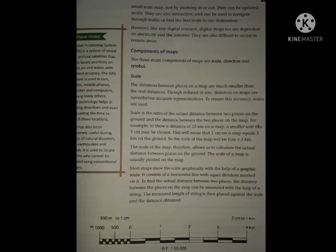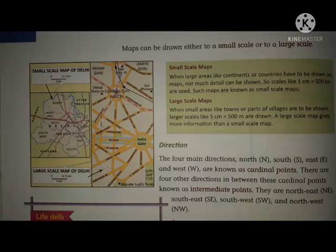By using centimeters, we can express certain kilometers on a map. Most maps are scaled graphically with the help of a graphic scale. To find the accurate distance between two places, a string is placed on the scale and the distance is accurately obtained. Maps can be either small scale or large scale. A small scale map can be 1 centimeter to 500 kilometers, and a large scale map can be 5 centimeters to 500 meters. A large scale map gives more information than a small scale map.